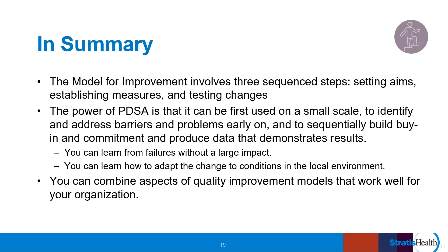In summary, the model for improvement is built on cornerstones of the science of improvement. It involves three sequence steps: setting aims, establishing measures, and identifying and then testing changes. The power of PDSA with iterative tests of change is that it can be first used on a small scale in order to identify and address barriers and problems early on, and to sequentially build buy-in and commitment and produce data that demonstrates results. You can learn from failures without a large impact, and you can learn how to adapt the change to conditions in the local environment. Remember that you can combine aspects of quality improvement models that work well for your organization.